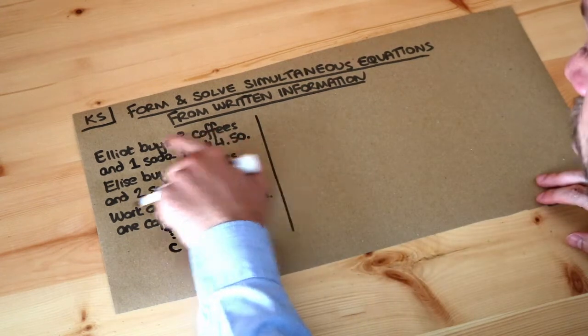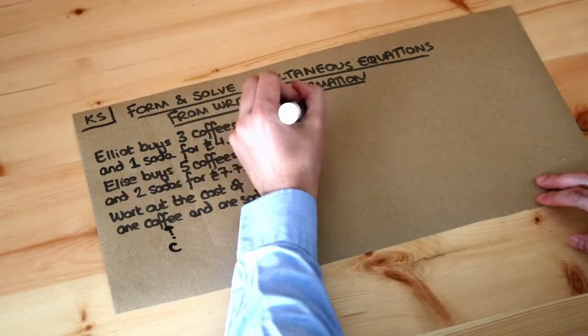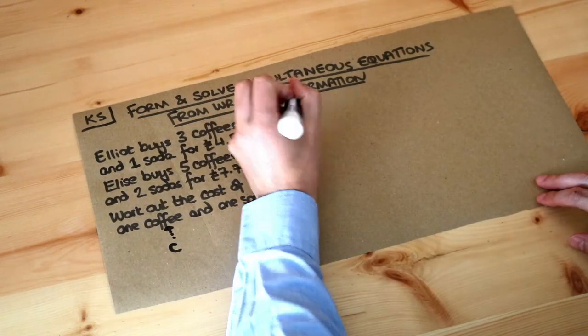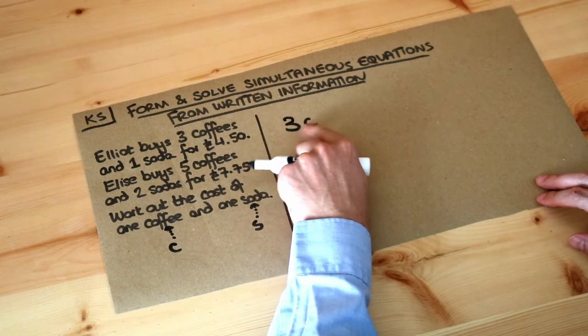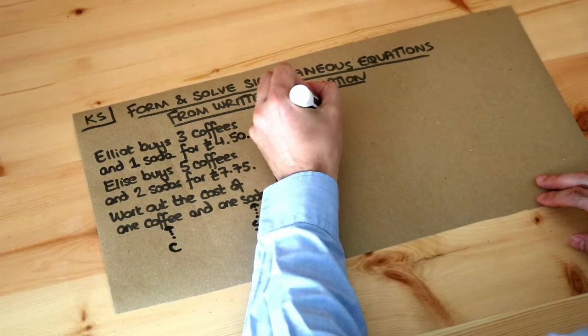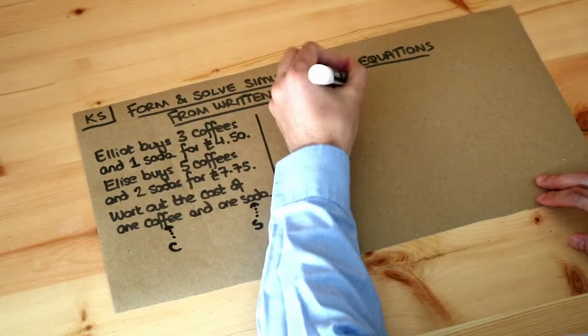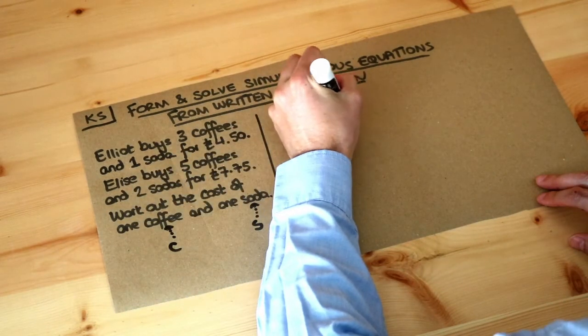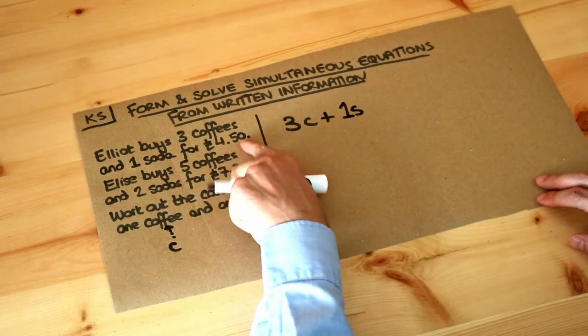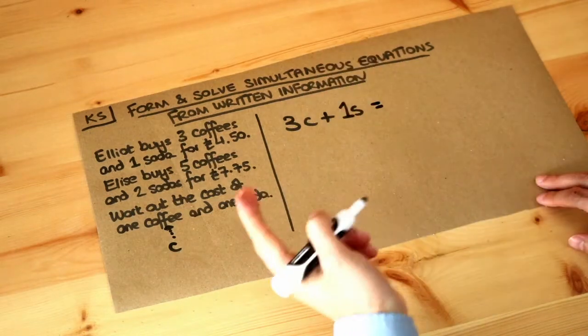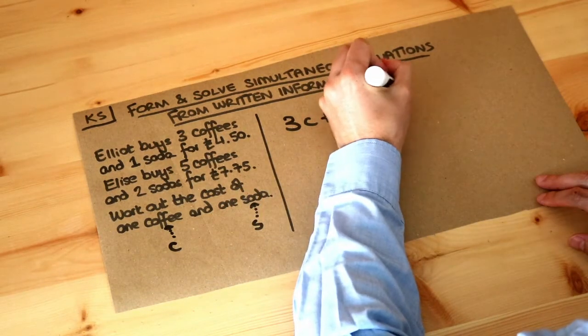If you bought three coffees and one soda, you want three coffees, so three times c, plus one soda, which is just s. We know that equals £4.50. Since we're working in pence, that's equal to 450 pence.